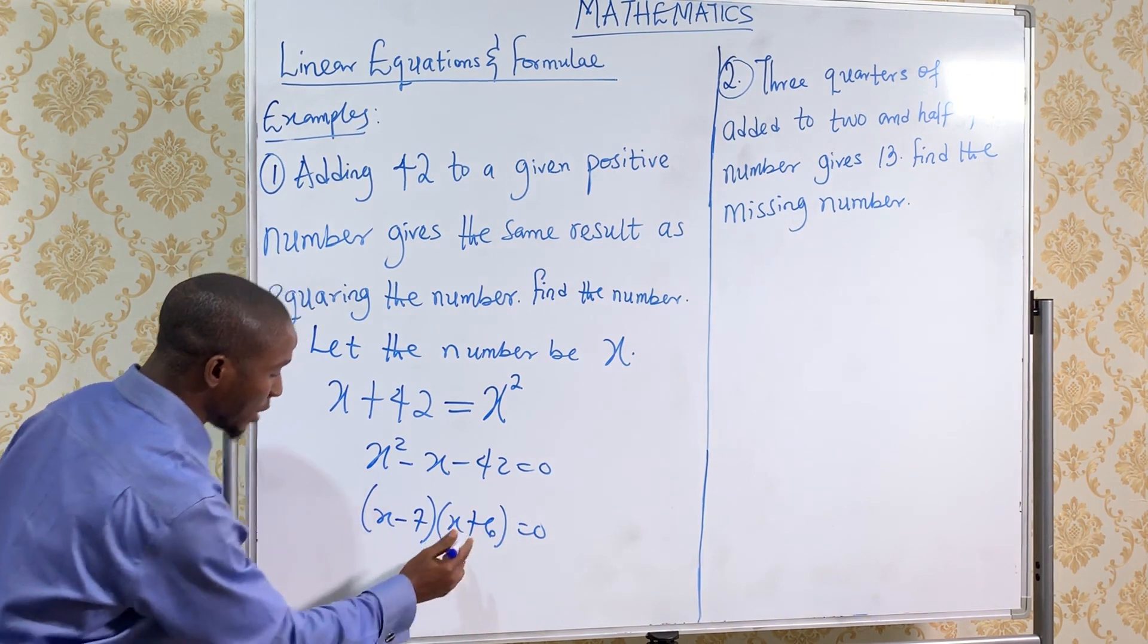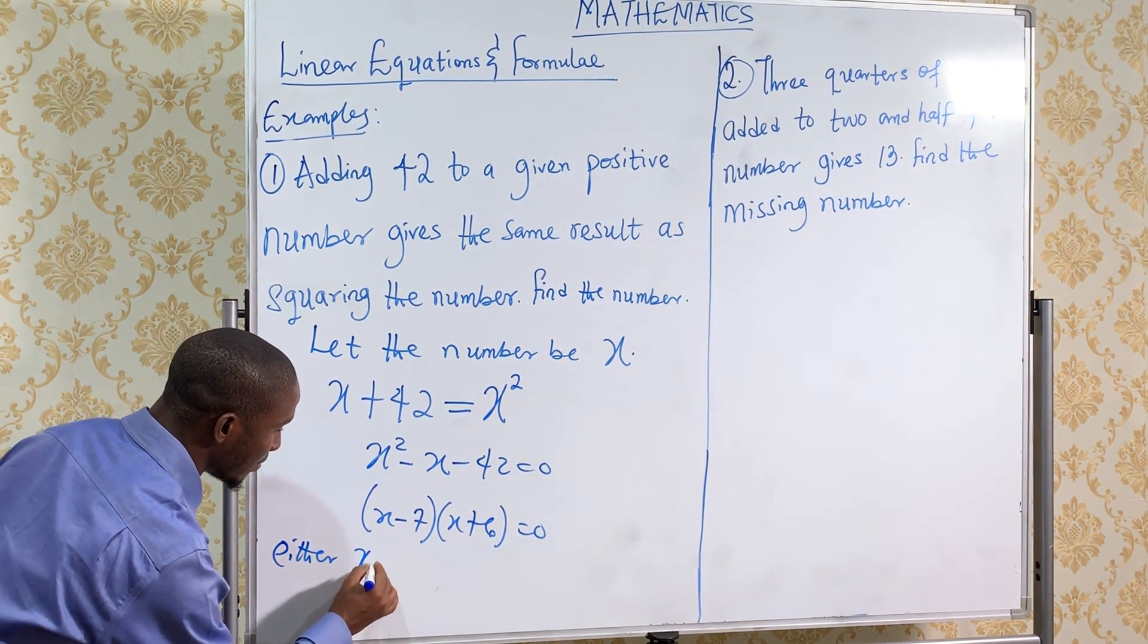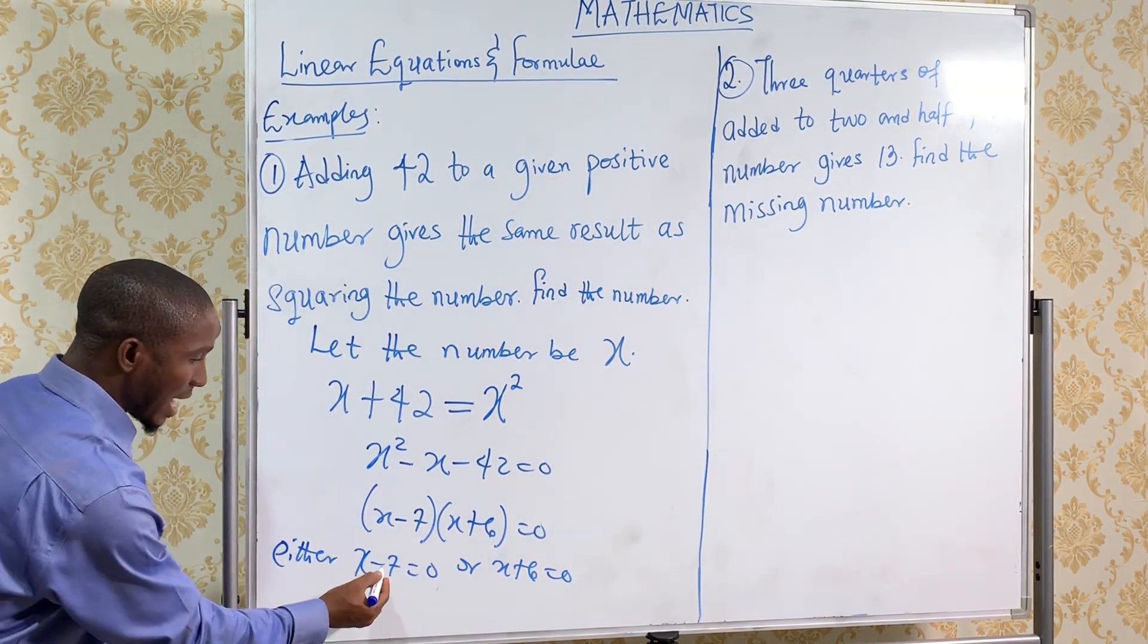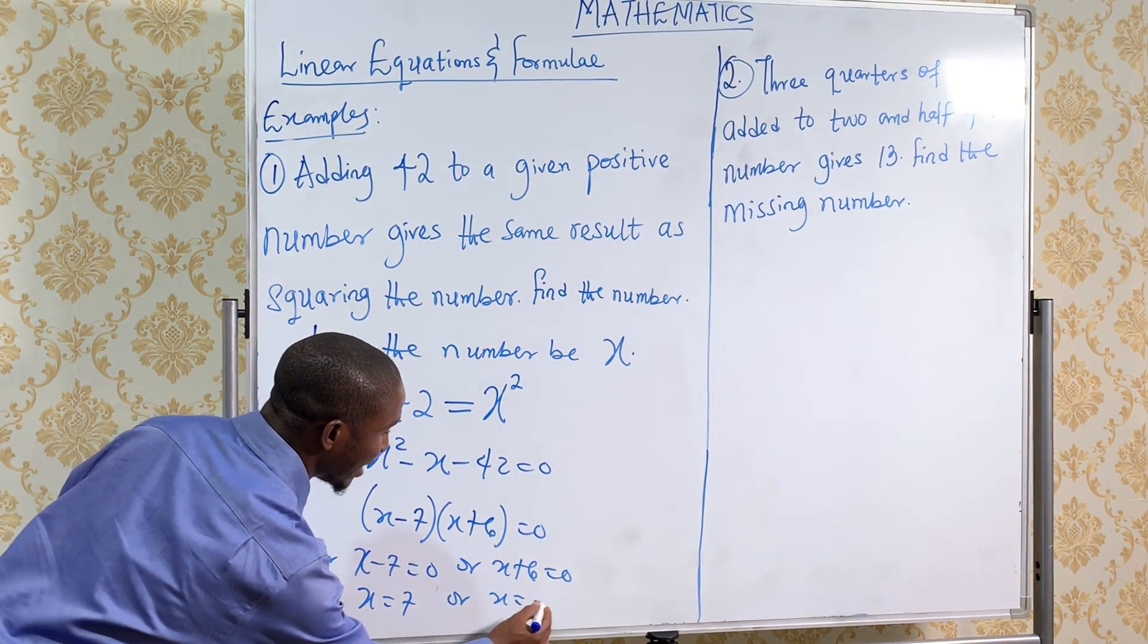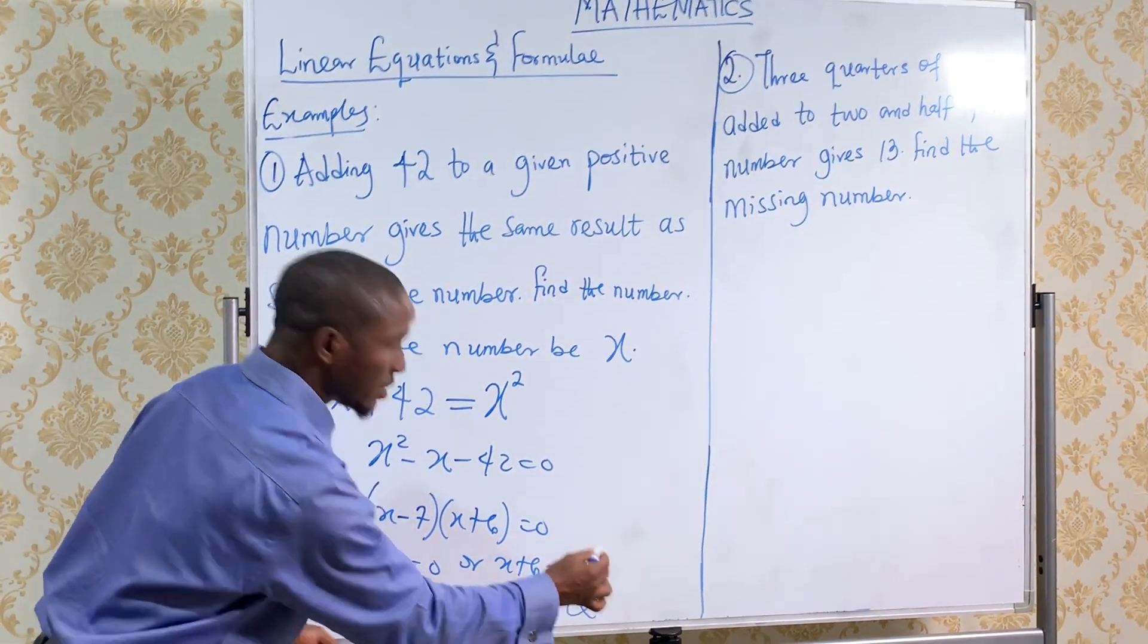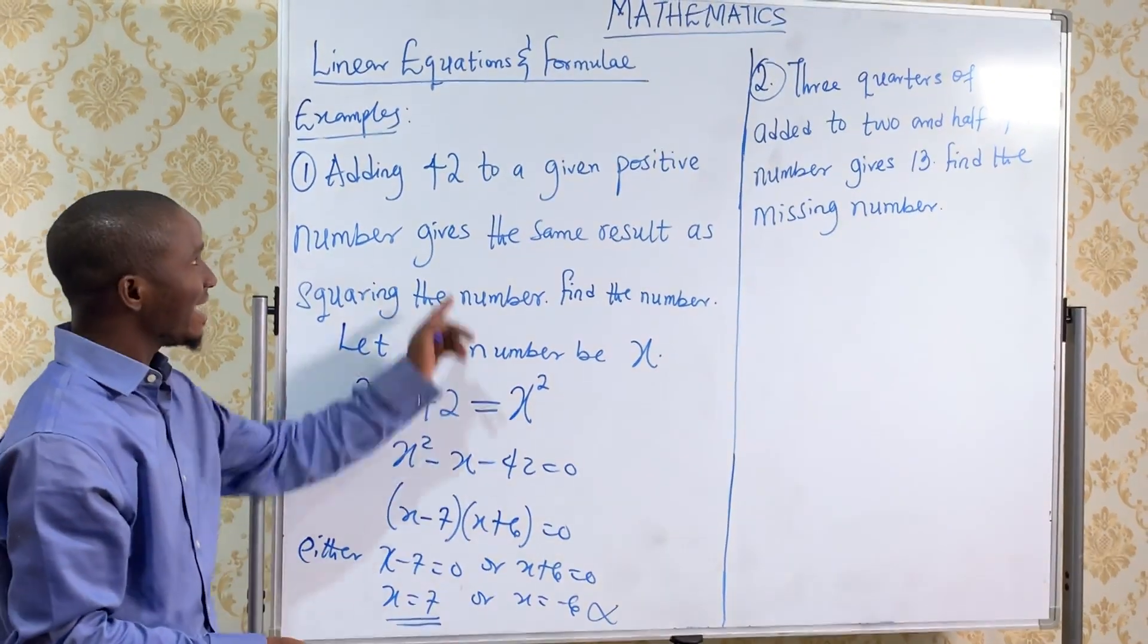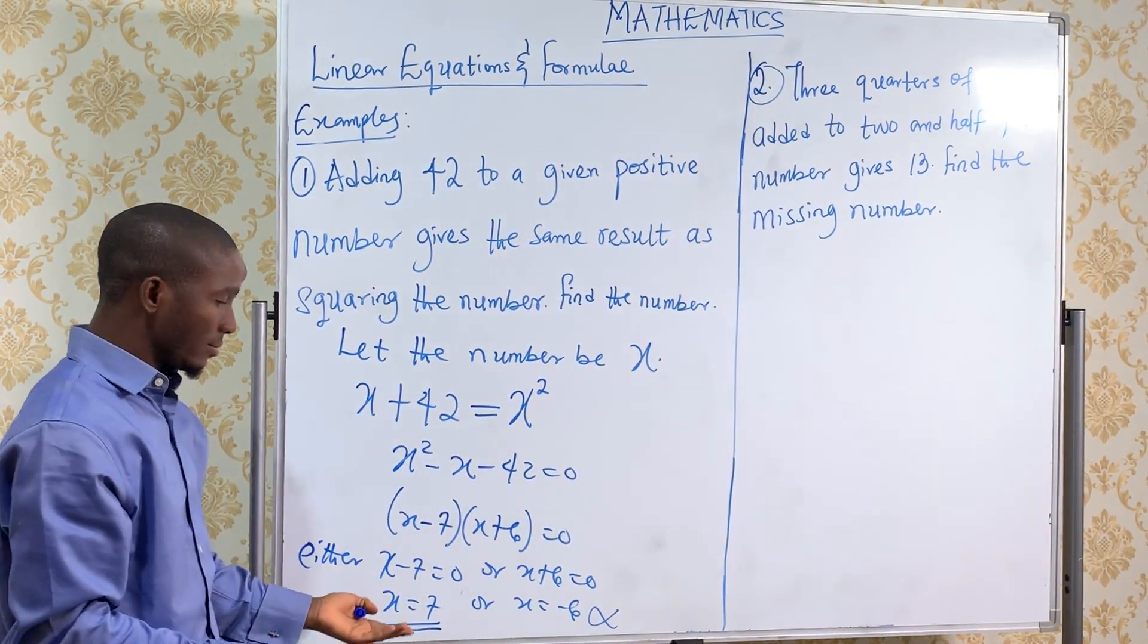Now x minus seven and x plus six equals zero. Pick it one after the other: either x minus seven equals zero or x plus six equals zero. That gives you x equals seven or x equals minus six. But x cannot be minus six, rather x equals seven because the question says that x is a positive number.